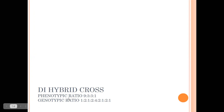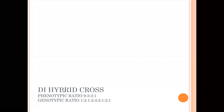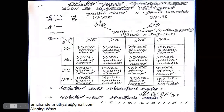The dihybrid cross phenotypic ratio is 9:3:3:1, and the genotypic ratio is 1:2:1:2:4:2:1:2:1. These are the phenotypic ratio and the genotypic ratio of the dihybrid cross.